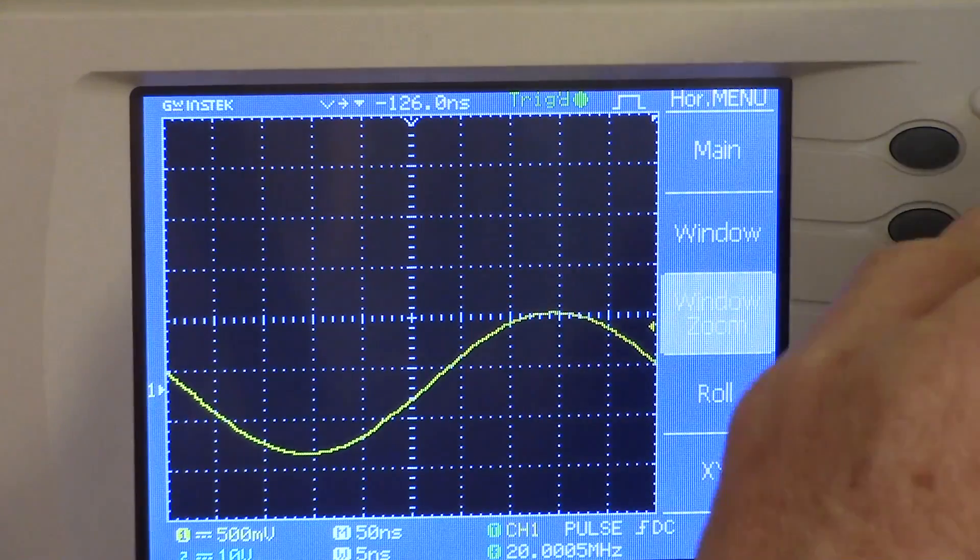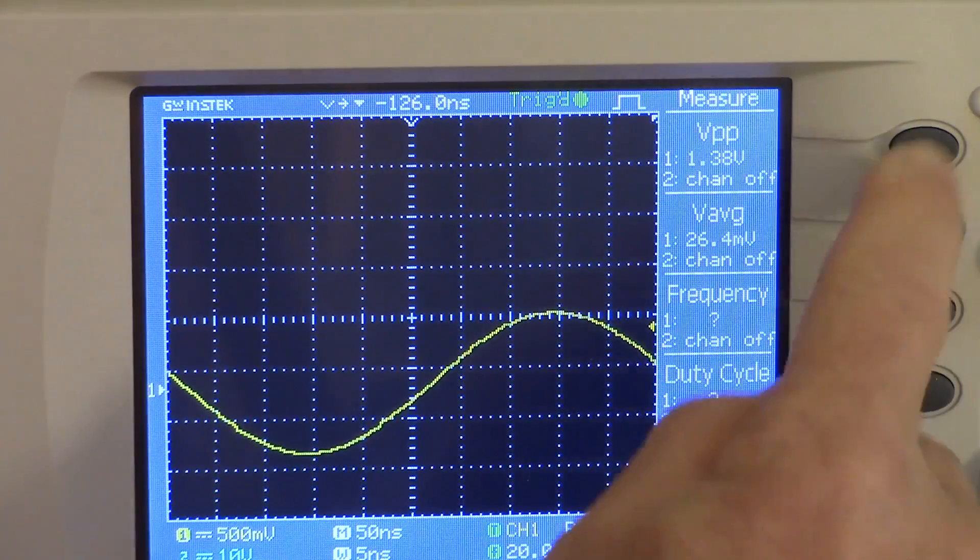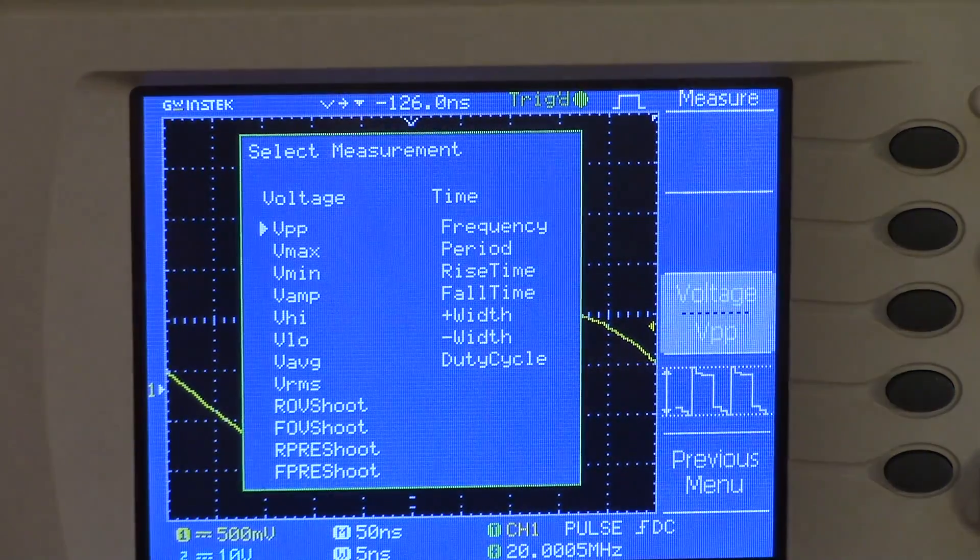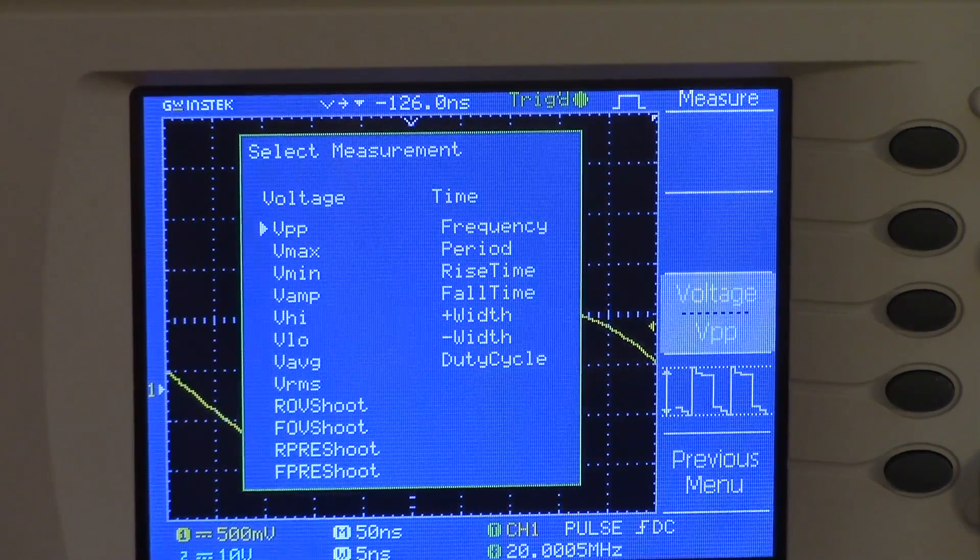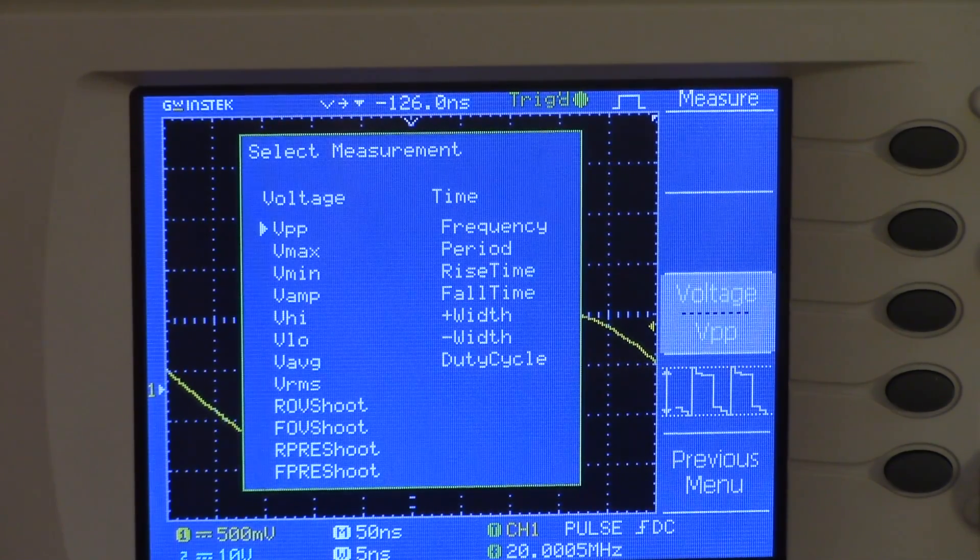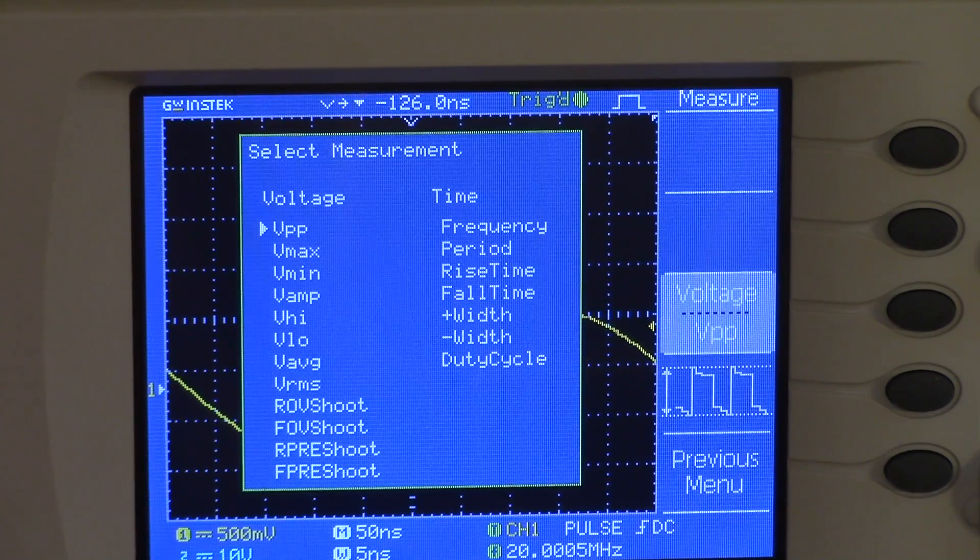The thing supports a million kinds of measurements. More measurements than most hobbyists certainly would ever use. Here's a list of all of them: VPP, Vmax, Vmin, you name it. Frequency period, rise and fall time, all kinds of stuff. It's quite handy.